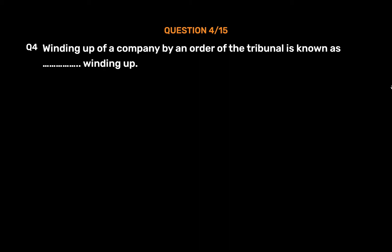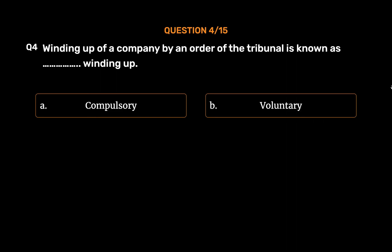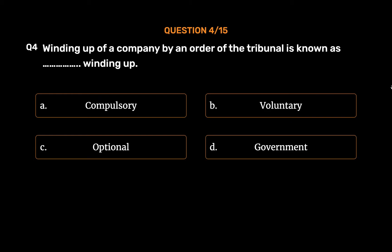Question number 4. Winding up of a company by an order of the tribunal is known as which type of Winding up? Option A: Compulsory. Option B: Voluntary. Option C: Optional. Option D: Government. The correct answer is Option A — Compulsory.